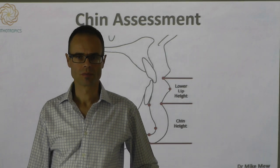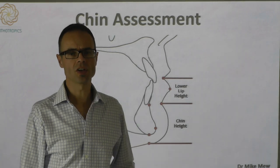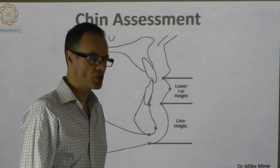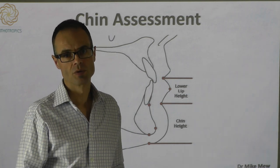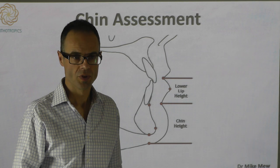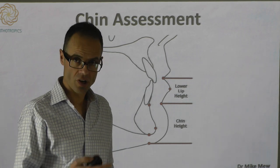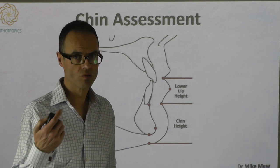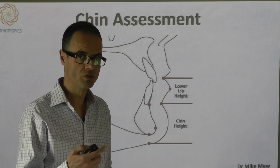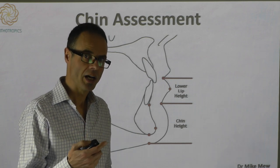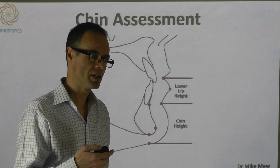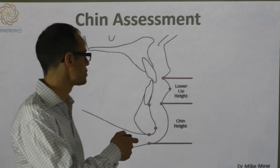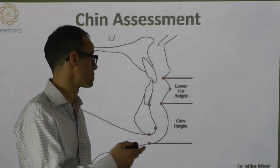Chin assessment. Assessing the chin — there's a great variety of chin shapes within modern humans. This contrasts with our ancestors, within all racial groups, who have very uniform chin shapes. This variety requires a certain level of assessment, and here's a way of going about making that assessment.